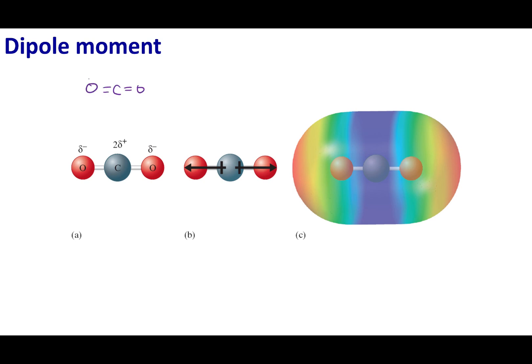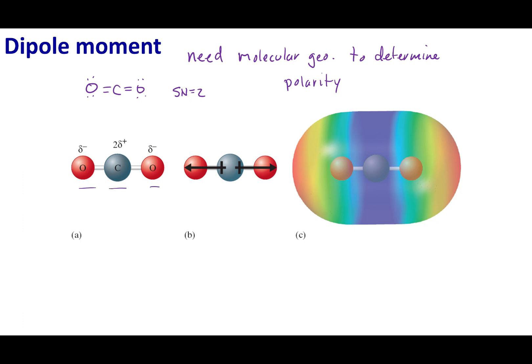If I were to go ahead and draw the Lewis dot structure of CO2, what you would get is this Lewis dot structure. Now to determine if a molecule is polar or not, you cannot stop at the Lewis dot structure. You need to get the molecular geometry to determine polarity. In this case, I have steric number two, and that gives me a linear molecular geometry.